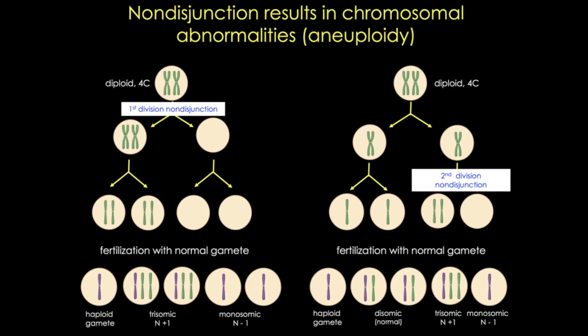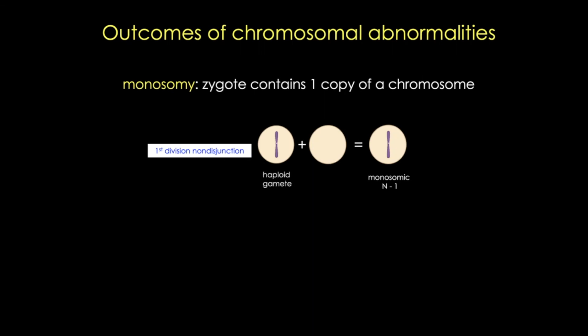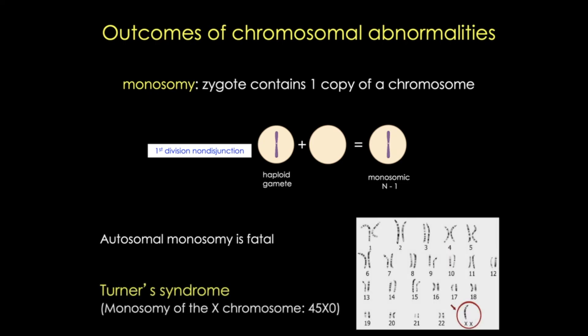Let's take a look at an example of non-disjunction where the homologous chromosomes fail to separate, resulting in monosomy. In this case, the normal haploid gamete is paired with a gamete that's missing a chromosome. We know that autosomal monosomy is fatal, probably due to gene dosage. But monosomy of the X chromosome results in Turner syndrome, in which a female is partially or completely missing an X chromosome. This results in some very specific phenotypes: these persons have a short and webbed neck, low-set ears, they have abnormalities in their heart and kidneys, they're very short, and they often require hormone treatment to develop secondary sex characteristics.